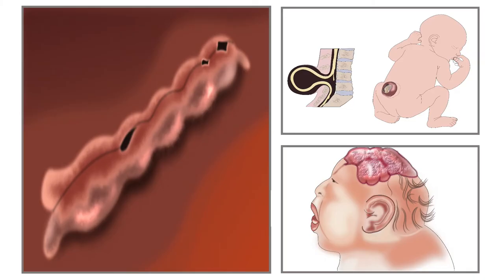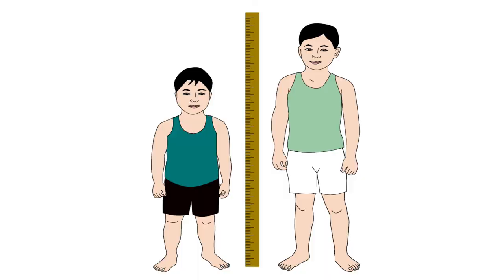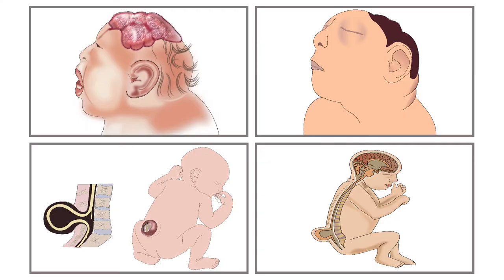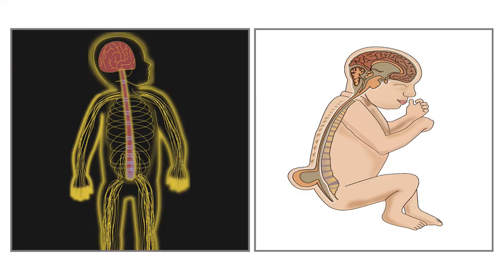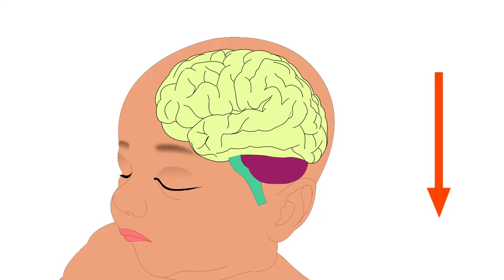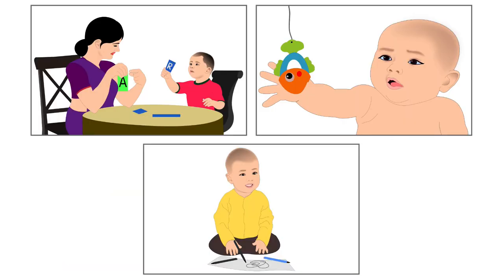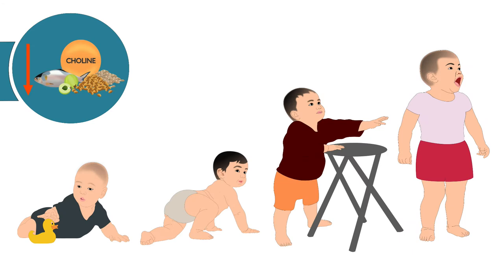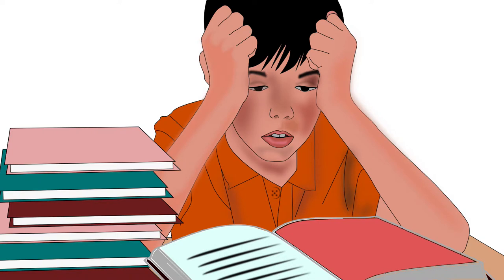Deficiency can cause neural tube defects and stunting in children. Neural tube defects are birth defects that affect the nervous system and spine, and also affect brain development. Intelligence and motor development also get affected. Deficiency in growing children leads to poor memory and difficulty in learning.